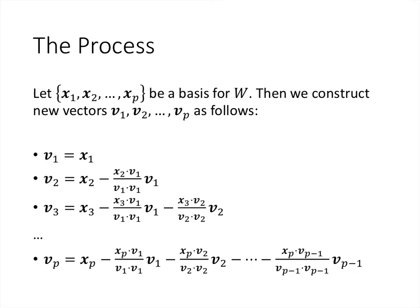And the Gram-Schmidt process allows us to start with any basis for W, and use it to construct a new basis that is orthogonal or orthonormal, whichever one we want. So here's how the process works. We start with a basis x1, x2, up through xp, and we assume that's a basis for the subspace W. And then we're going to construct new vectors, which we'll call Vs: v1, v2, up through vp.